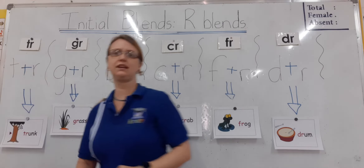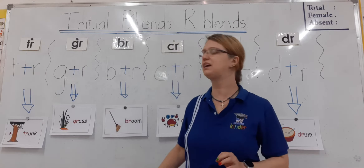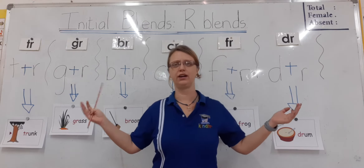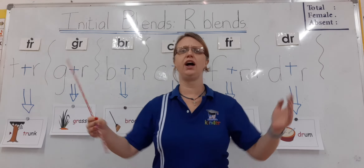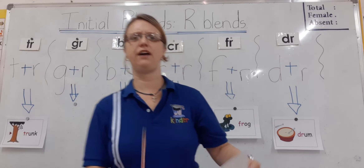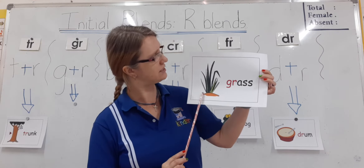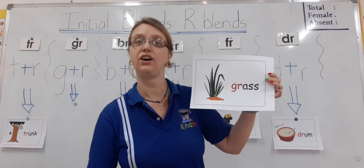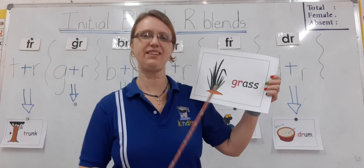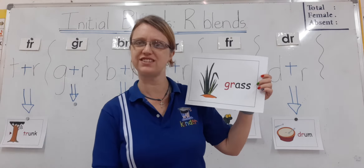Let's keep moving. The next one we're going to look at is GR. We make it with the letters G plus R. GR. And let's see the picture. There we have it — grass. The grass is growing green. Grass, grow, green — did you see what teacher Michelle did there? I used the GR in three different words. This word is grass.